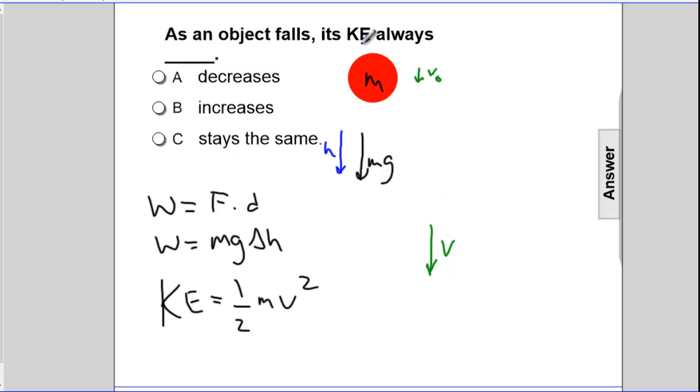So one reason that the kinetic energy is, the answer is, by the way, going to be B, is because the work is positive. Another one is that if you increase velocity, if we increase one variable on one side in the numerator, we have to increase the other. And by the way, the mass stays the same. So the kinetic energy increases in this case.